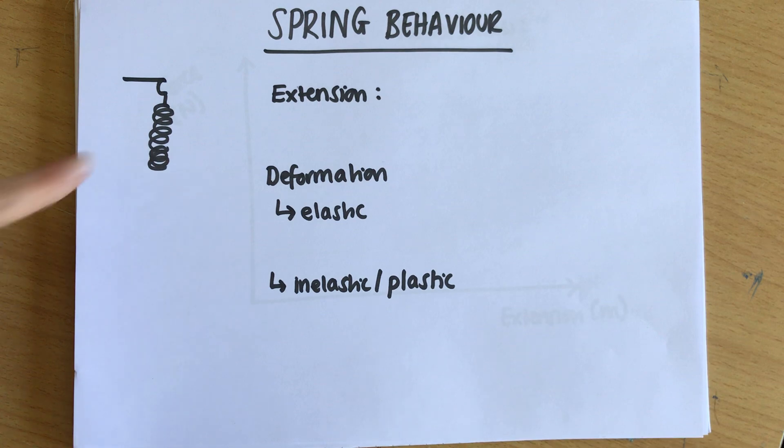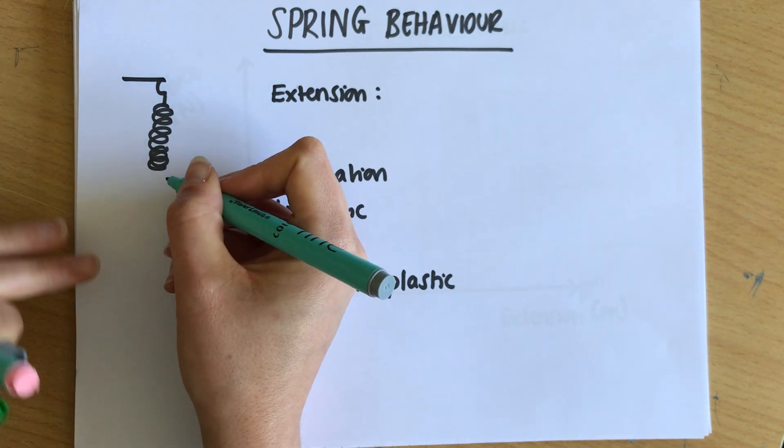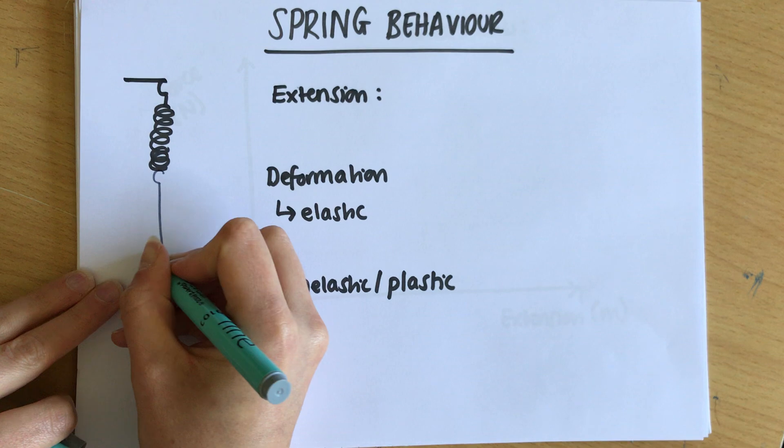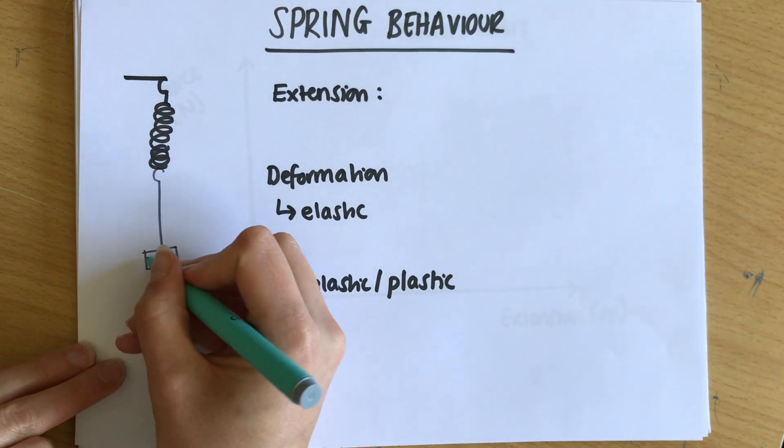If I've got a spring, what I'd normally do in physics is hang it on a clamp stand and then add on a mass like so on a mass hanger.